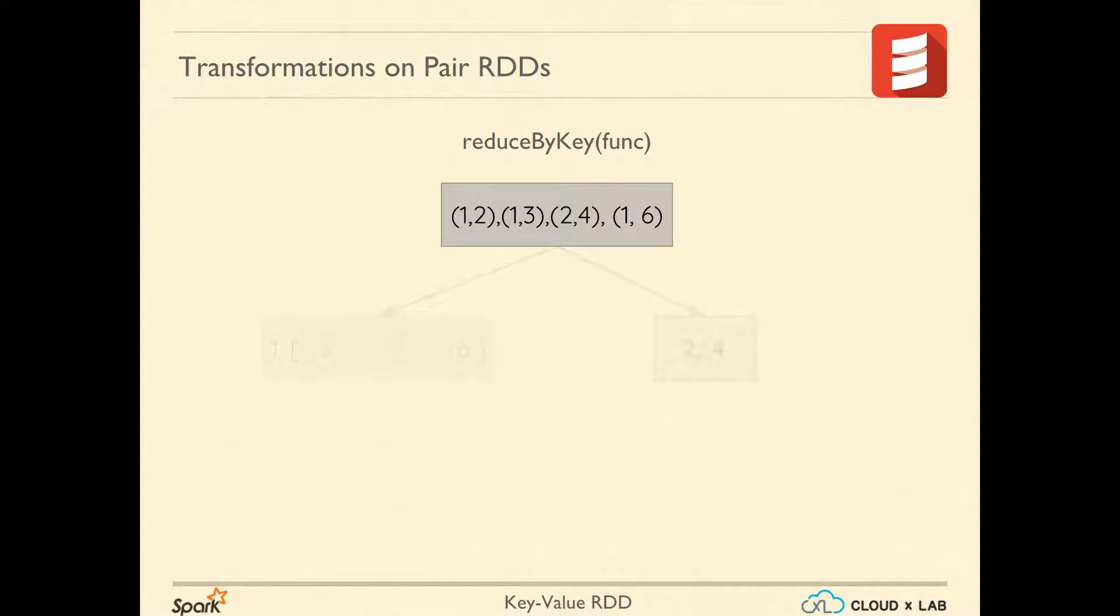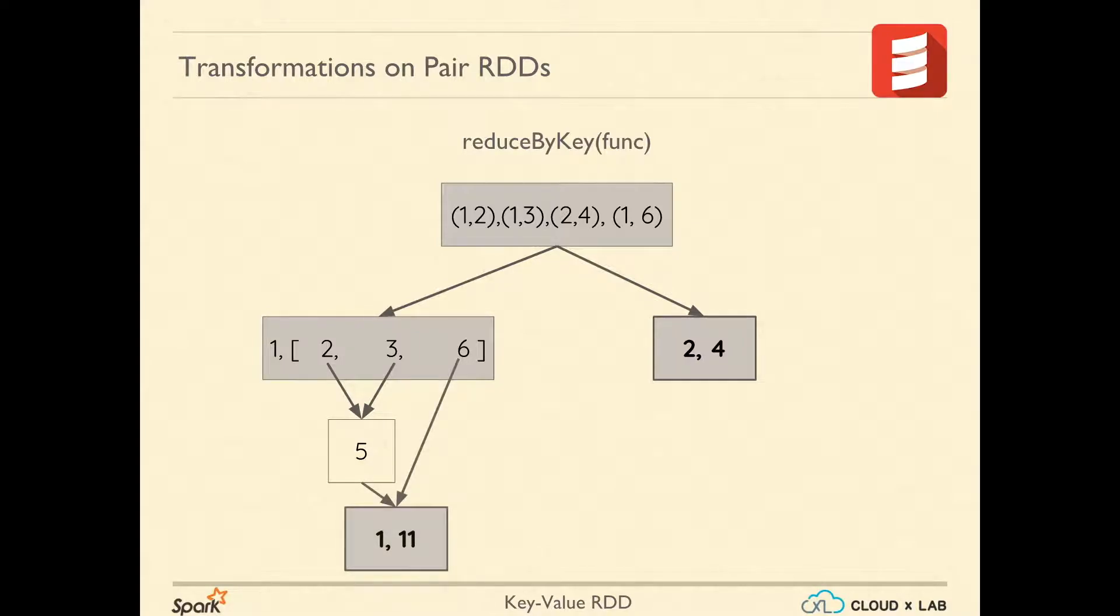Here we have two keys, 1 and 2. For 1, we grouped 2, 3, 6 together, and for 2 there is only one value which is 4. Now the values 2, 3, 6 of 1 are being reduced using the function passed as argument to reduceByKey, which here is summation. So 2 and 3 is combined to 5, and 5 and 6 summed up to 11. So the result is (1, 11) and (2, 4).